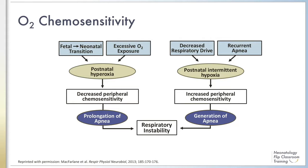This figure illustrates a proposed model showing the effects of hyperoxia and intermittent hypoxia on carotid body activity and subsequent effects on respiratory stability. On the left, fetal-neonatal transition and exposure to excessive supplemental oxygen can lead to postnatal hyperoxia, causing decreased peripheral chemosensitivity and prolonging apneic events. On the right, decreased respiratory drive and recurrent apnea causing intermittent hypoxia triggers increased peripheral chemosensitivity, which can trigger hyperventilation, decrease carbon dioxide, and lead to apnea. Thus, decreased peripheral chemosensitivity may prolong apnea, while increased peripheral sensitivity may precipitate apnea.